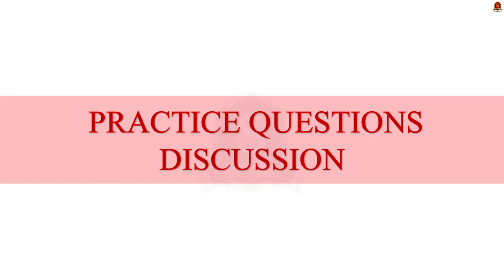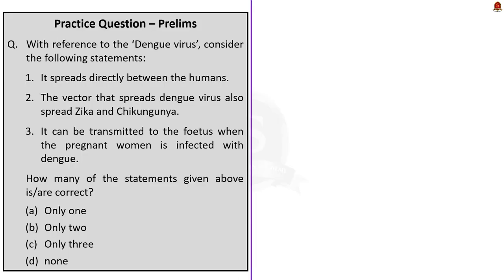Now let us move on to the preliminary practice question discussion. The first question is about the dengue virus. Statement 1: it spreads directly between humans — this statement is incorrect because the dengue virus spreads through infected female Aedes species mosquitoes and cannot spread directly between humans. Statement 2: the vector that spreads dengue virus also spreads Zika and Chikungunya — this statement is correct. Statement 3: it can be transmitted to the fetus when the pregnant mother is infected with dengue — this statement is also correct. So the correct answer is option B, only statements 2 and 3.